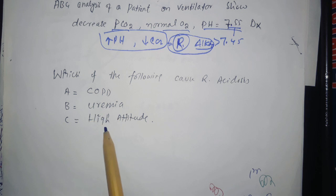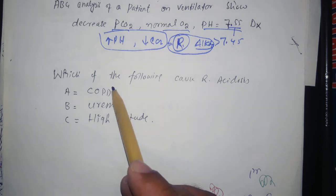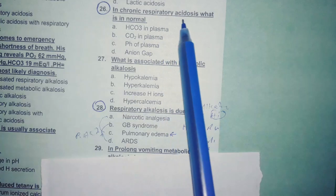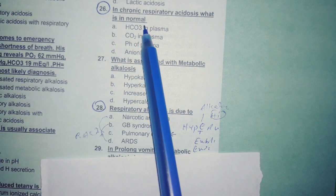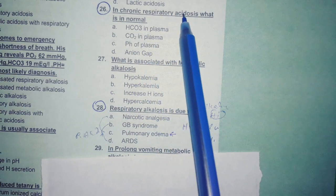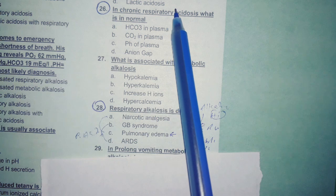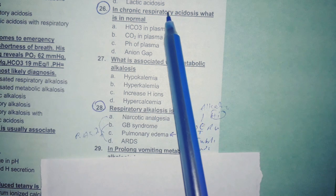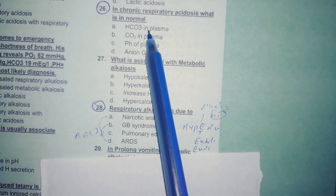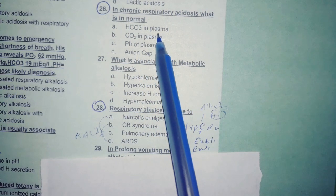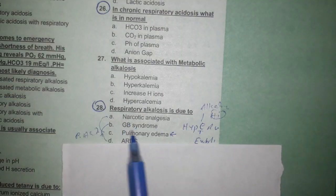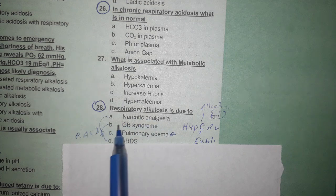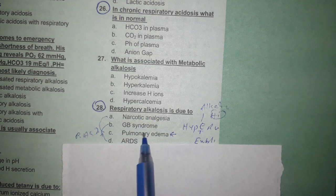Which of the following causes respiratory acidosis — COPD, uremia, or high altitude? The answer is COPD. In chronic respiratory acidosis there is renal compensation: increased bicarbonate absorption normalizes pH. Finally, respiratory alkalosis is caused by which — narcotic analgesic, Guillain-Barré syndrome, pulmonary edema, or ARDS? The answer is pulmonary edema.